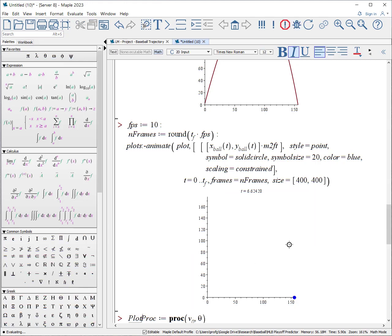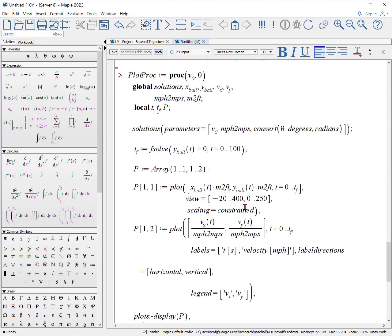What's the next part? Let's say we want to explore a bunch of animations. And so this is a procedure. We're going to pass it the two parameters. And it's going to set those parameters into the solutions. Solve for when the ball hits the ground. Create an array of plots. The first plot, which is in row one, column one, is the plot of our trajectory as before. And the second plot, which is in row one, column two, is a plot of both velocity in the x and y direction as a function of time.